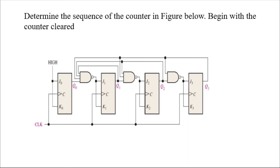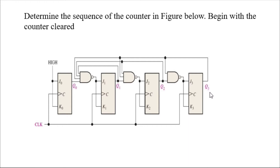Welcome to my channel. Today's question is to determine the sequence of the counter in the figure below, beginning with the counter cleared. This is the circuit — basically there are four JK flip-flops and three NAND gates. The first JK flip-flop is provided a high input, and the rest receive input through NAND gates. Initially the counter is cleared, meaning q0, q1, q2, q3 are all zero.